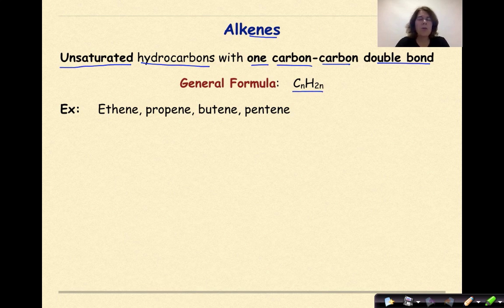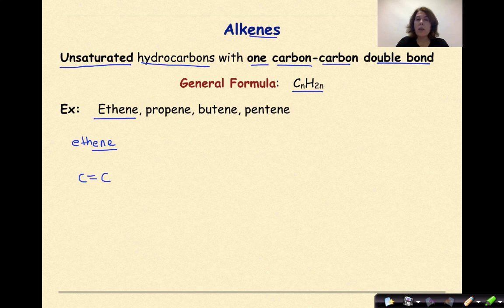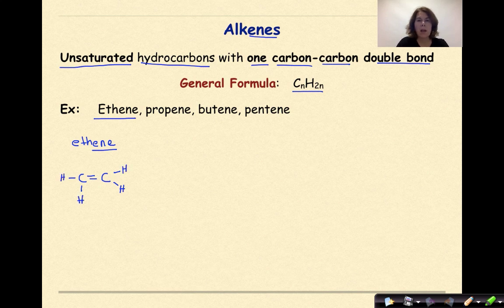You can't have a 'methene' because 'meth' means one carbon, and we need at least two carbons to form a double bond between them, which is why we start with ethene. 'Eth' means two carbons, and that -ENE ending tells us we have a double bond. Each carbon can form four bonds; they already have two from the double bond, so we add hydrogens to fill the remaining bonds. This is ethene: C2H4.